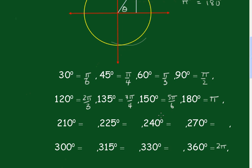If you like, just pause the video and finish the rest of these off. Alright, so this one's 7π/6. 225 was 5π/4. You can easily check this by simply going 5/4 times 180 to get the result. 240 degrees is 4π/3. 270 is 3π/2.